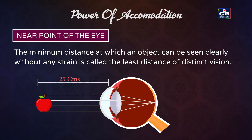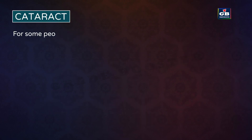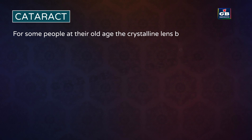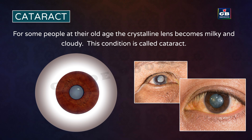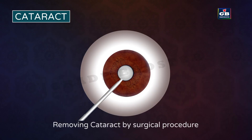The near point of a normal adult eye is 25 centimeters. Cataract: for some people at old age, the crystalline lens becomes milky and cloudy. This condition is called cataract, which causes partial or complete loss of vision. This can be corrected by cataract surgery.